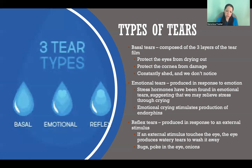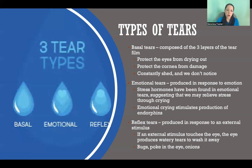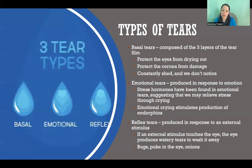Our third type of tears are reflex tears. Those are tears that we produce in response to an external stimulus — if you're poked in the eye, a bug flies at your eye, or you're cutting onions and you start to tear up, those are all reflex tears. Your eyes tear up because you're trying to flush out some external stimulus — something that got into your eye, maybe even an eyelash — to keep your eye safe and protected.